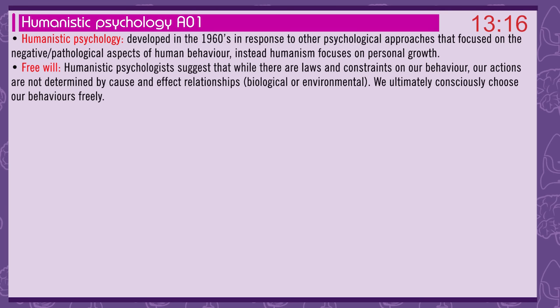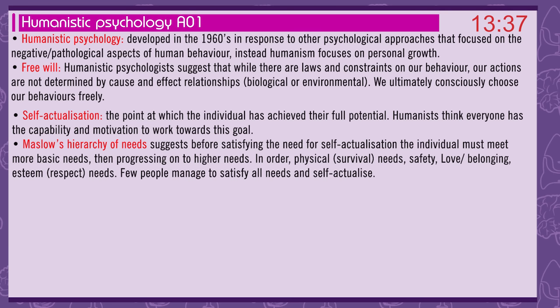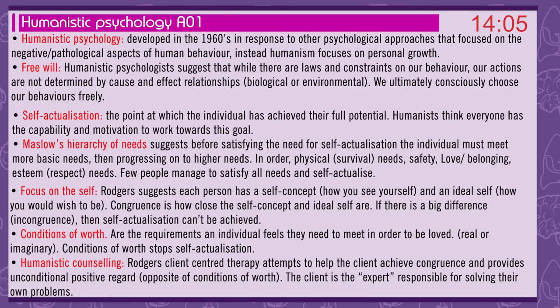Humanistic psychology was developed in the 1960s in response to other psychological approaches that focused on the negative or pathological aspects of human behaviour; instead, humanism focuses on personal growth. Free will: humanistic psychologists suggest that while there are laws and constraints on our behaviour, our actions are not determined by cause-and-effect relationships — biological or environmental — and we ultimately consciously choose our behaviours freely. Self-actualisation is the point at which the individual has achieved their full potential. Maslow's hierarchy of needs suggests the individual must meet more basic needs first — physical survival, safety, love and belonging, esteem — before progressing to self-actualisation, though few people manage to satisfy all needs.